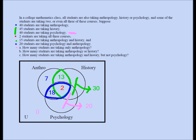Let's answer part A: how many students are taking only anthropology? The answer is 7. I know 40 students are taking anthropology, but some of these 40 are also taking history and psychology. The question asks for only anthropology — the answer is 7.